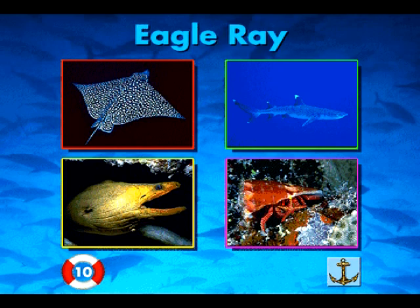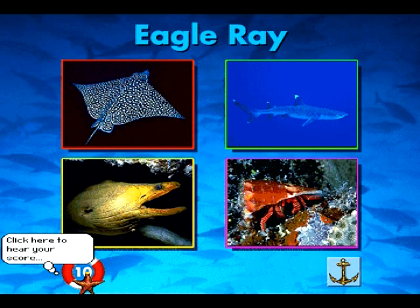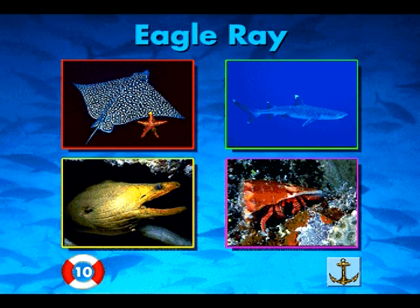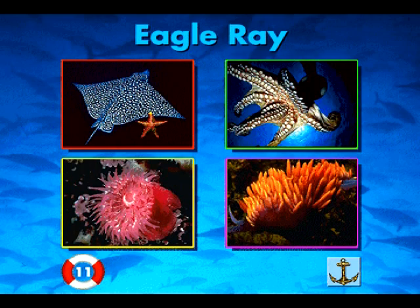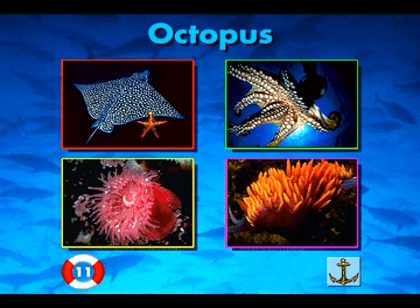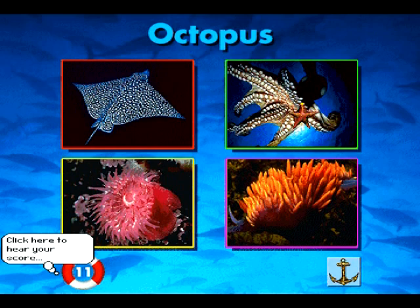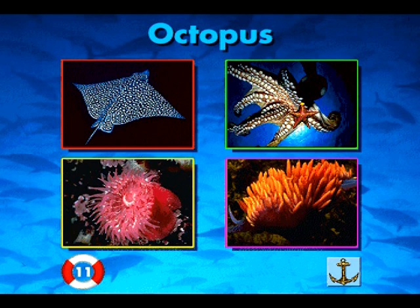I'm an eagle ray. Can you find me? This is your score so far. Ten. You're right! I'm an eagle ray. I'm an octopus. Can you find me? This is your score so far. Eleven. You're right! I'm an octopus. Congratulations! You got them all right!